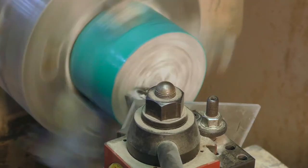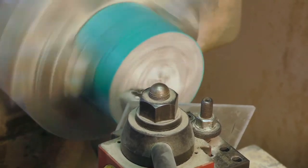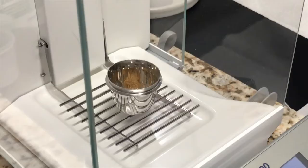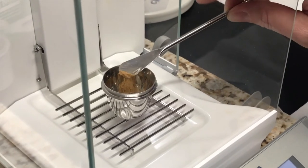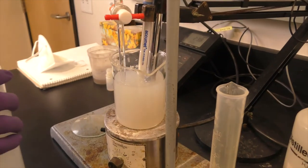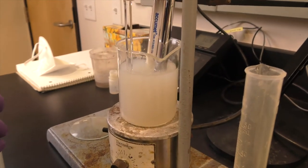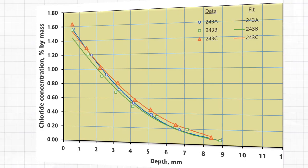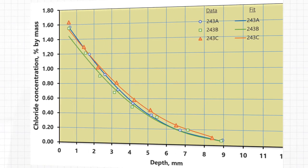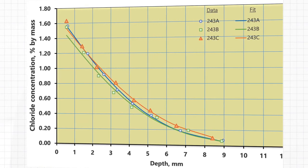After the powder samples are prepared, chloride concentration testing is performed according to the different depths that those powder samples came from within the member. The chloride profile developed from these tests then helps us to understand what the propensity for corrosion is. These material properties have an influence on the permeability of the concrete, which is an important input of the service life evaluation model.